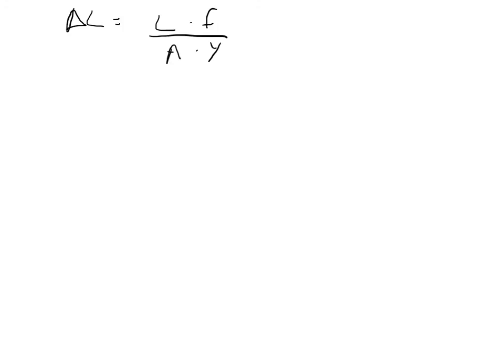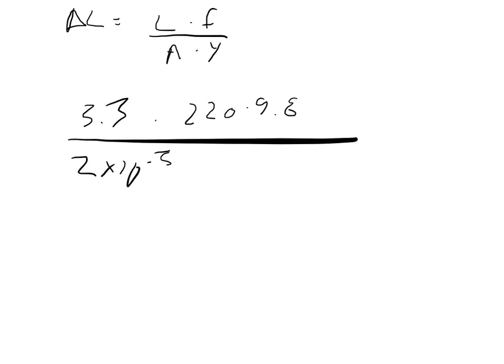So now all we need to do is plug in our numbers. We get that the length was 3.3 meters. The force was 220 times 9.8. We divide that by the area which was 2 times 10 to the negative 5th, and the Young's modulus was 8 times 10 to the 10th.